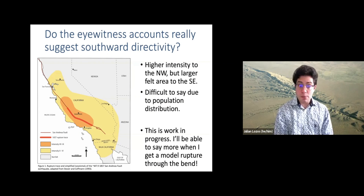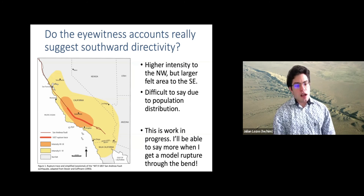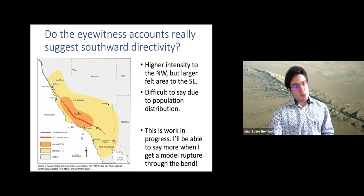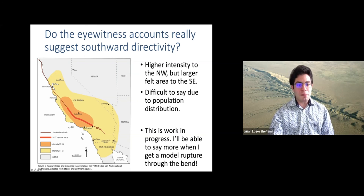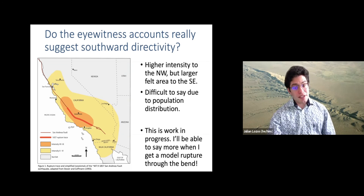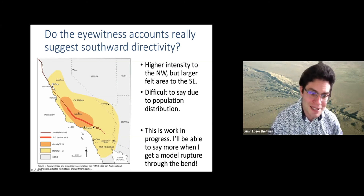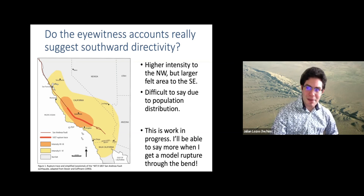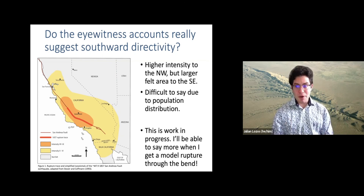That raises some interesting questions about 1857 beyond just how do I get it around the bend — what if it didn't start where we thought it did? That's another place to bring the eyewitness accounts back in. So these are some isoseismals based on eyewitness accounts, felt reports, and damage from 1857. At this point, the dense population was in the Bay Area, but also San Bernardino, which was actually one of the largest cities in Southern California at the time. You would think that a 7.9 charging to the south with all its directivity pointed right at San Bernardino would generate dramatic reports, but most eyewitness accounts from San Bernardino are a lot less violent than you'd expect.